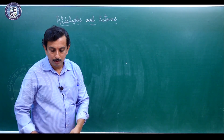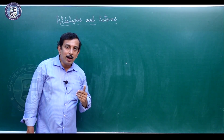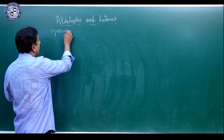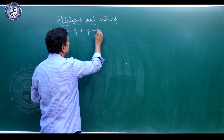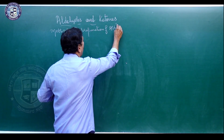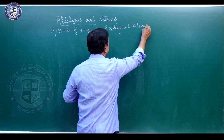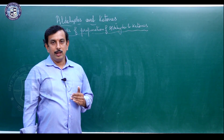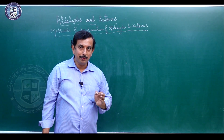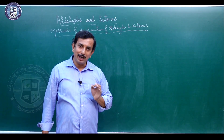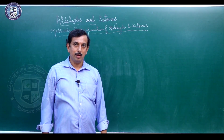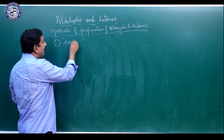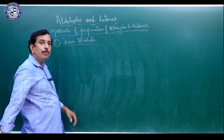Once we discuss the structure of carbonyl group, the next part is the methods of preparation of aldehydes and ketones. There are methods used for preparation of both aldehydes and ketones together, as well as some methods specific to each. The first method of preparation is from alcohols.